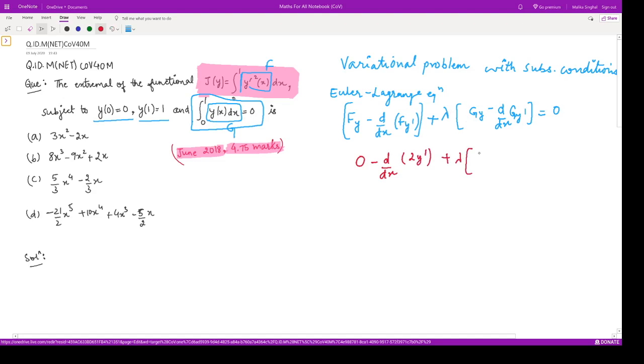So g_y is 1, and d/dx(g_y') is 0. Substituting into the Euler-Lagrange equation, we have -2y'' + λ = 0.